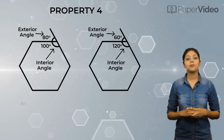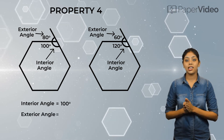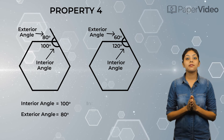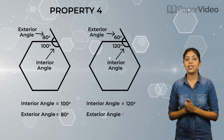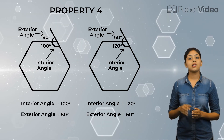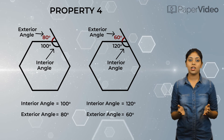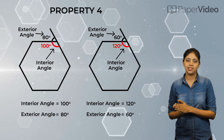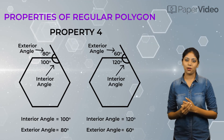This means that when interior angle equals 100 degrees, exterior angle equals 80 degrees. Similarly, when interior angle equals 120 degrees, exterior angle equals 60 degrees. Clearly, we can see that the value of the exterior angle in a regular polygon is decreasing with the increase in its corresponding interior angles. These are some important properties of a regular polygon.